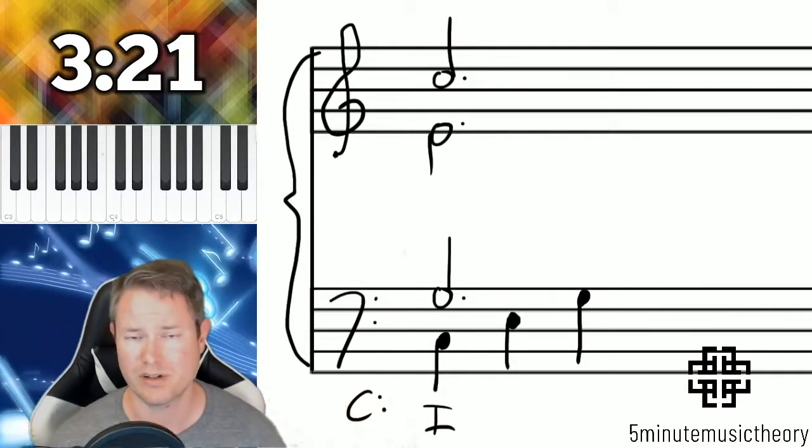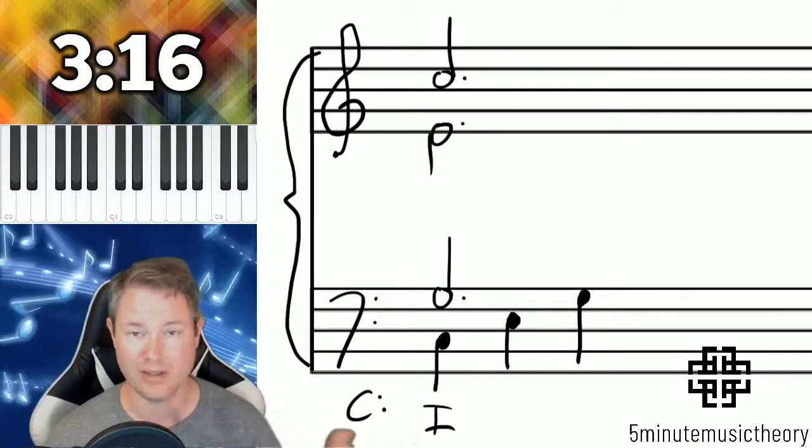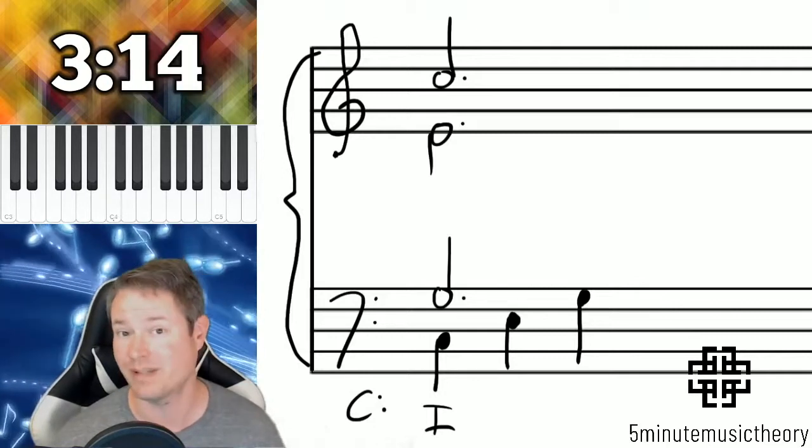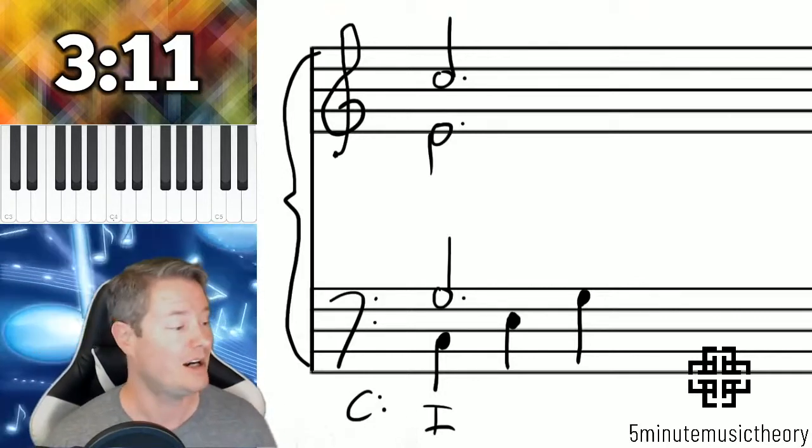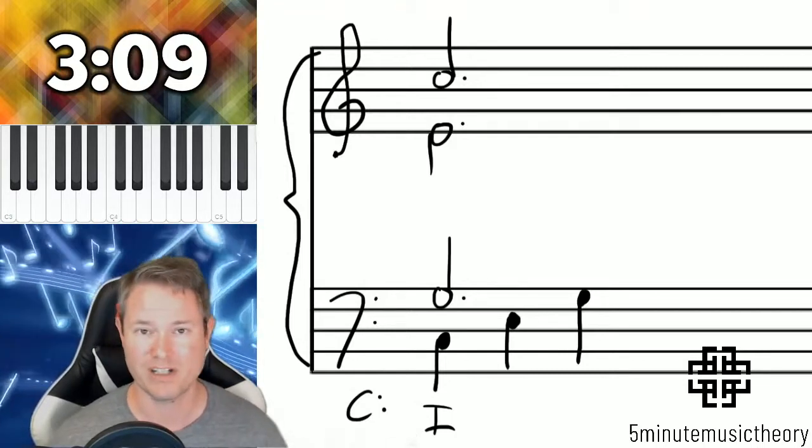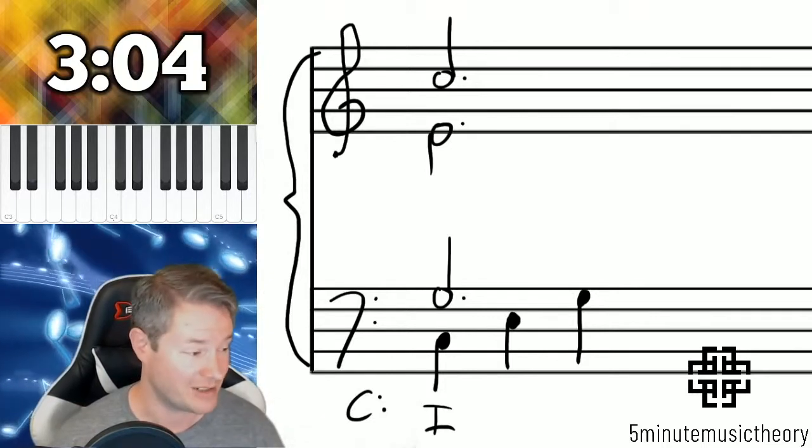But you might run into certain theory texts that cover the arpeggiated 6-4 and have you label them. The way you do that is just by putting a 6-4. Some even go as far as to put them in parentheses and then write 'arpeggiated.' But really, in my opinion, the arpeggiated 6-4 doesn't even need to be labeled, because it's just a byproduct of arpeggiation in the bass.